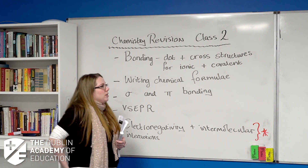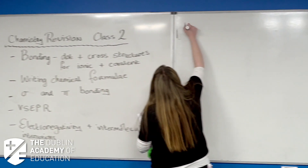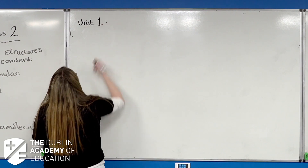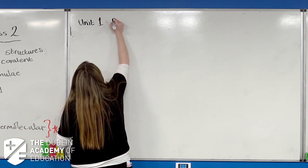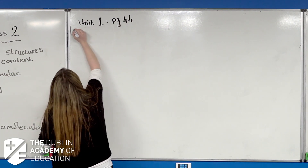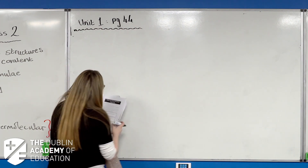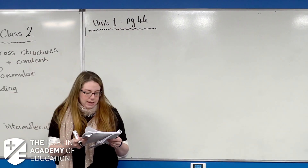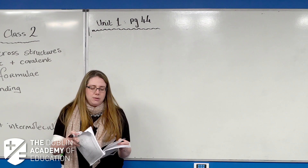For bonding and dot and cross structures, in unit one go to page 44. The definitions on page 44 — yes, you need to know them — but I'm not going to go through them now; I'm going to dive straight into ionic bonding.